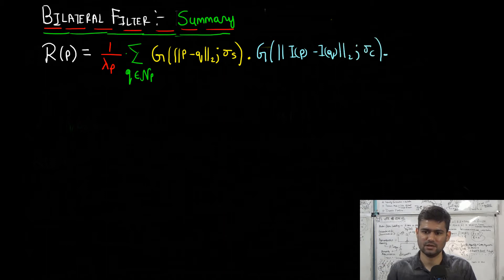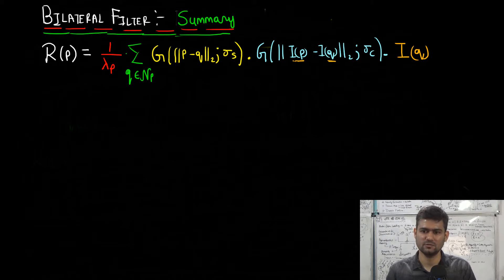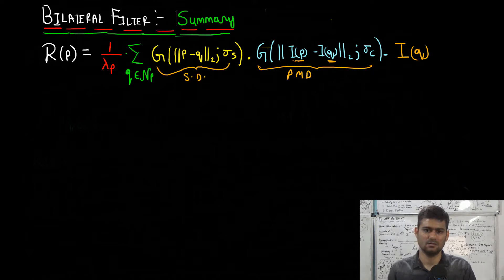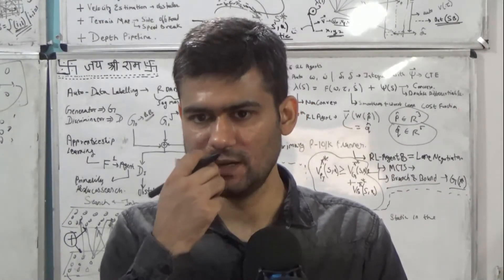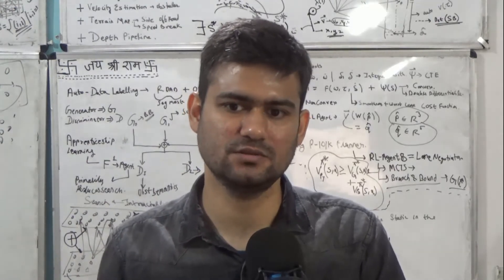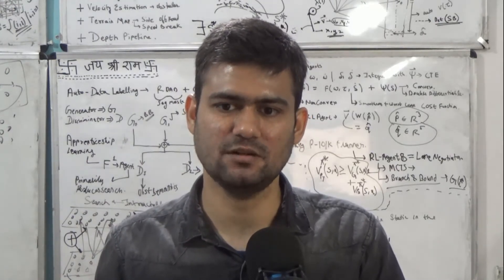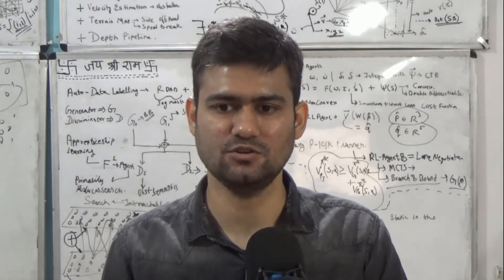The result is times i of q. In color images this will be a vector, and in grayscale images these will be scalars. This is the photometric distance component, and this is the spatial distance. The spatial part can be computed beforehand, while the photometric part has to be computed iteratively as we iterate over all pixel values. Due to this dependence on pixel values, the bilateral filter cannot be applied in the frequency domain, though efficient implementations do exist.